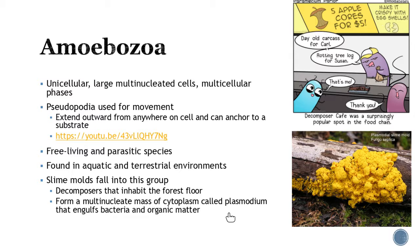Amoebozoa. These are going to be unicellular but they're going to be multi-nucleated cells and they have multicellular phases too. They use this false foot for movement and they're always changing shapes. They don't have one exact shape; they're always moving. This is a great video of an amoeba moving because it's always constantly changing shape. It's really kind of fun to watch, kind of relaxing almost. These are free living and some of them are going to be parasitic. You're going to find them primarily in aquatic and terrestrial environments, and if it is terrestrial it's going to be mostly in very moist areas. Slime molds fall into this group and they are key decomposers for the forest floor.